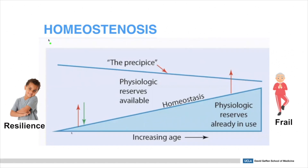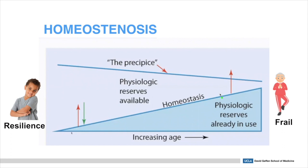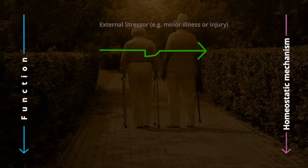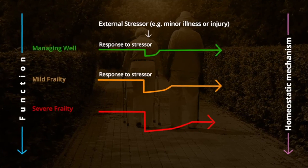An important concept to understand is homeostenosis. We all have some form of physiologic reserve. When we're younger, our physiologic reserve is larger, allowing the body to have more reserves to take on an external stressor like an infection or an injury. As we get older, the physiologic reserve becomes narrow. If you have an illness when you're young, you have all this reserve to be able to fight it. When you're older and if you have an illness, you only have this much reserve, and therefore older people have an increased risk of negative outcomes.